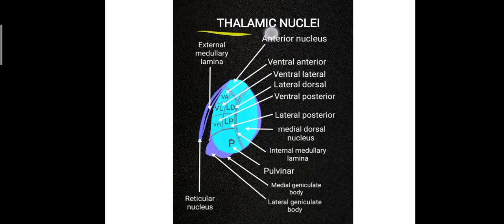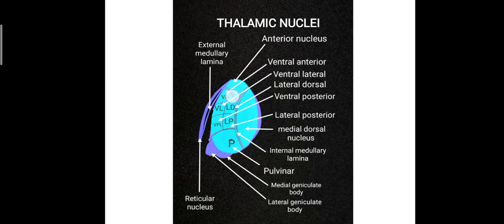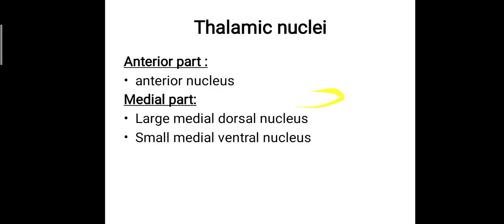The anterior nucleus lies in the anterior part. The medial part consists of a large medial dorsal nucleus and a small medial ventral nucleus — the latter requires a cross-sectional image to visualize. On the lateral part there are dorsal and ventral tiers of nuclei, with the pulvinar, lateral dorsal, and lateral posterior nuclei named on the diagram.